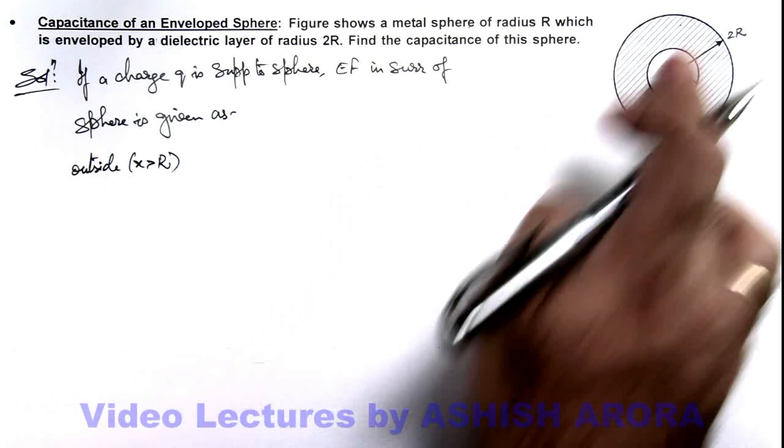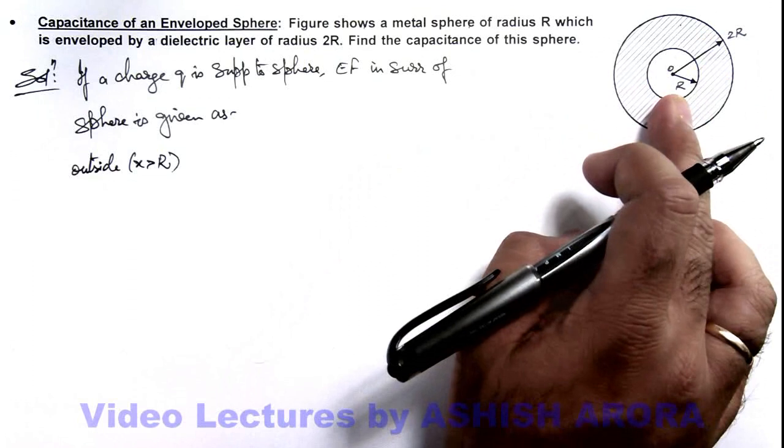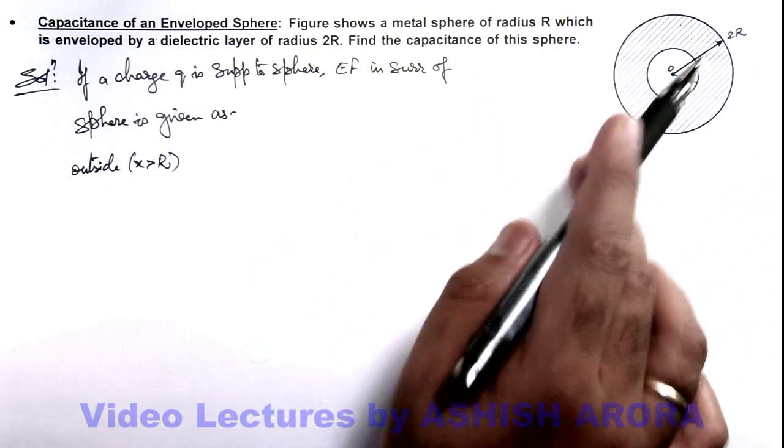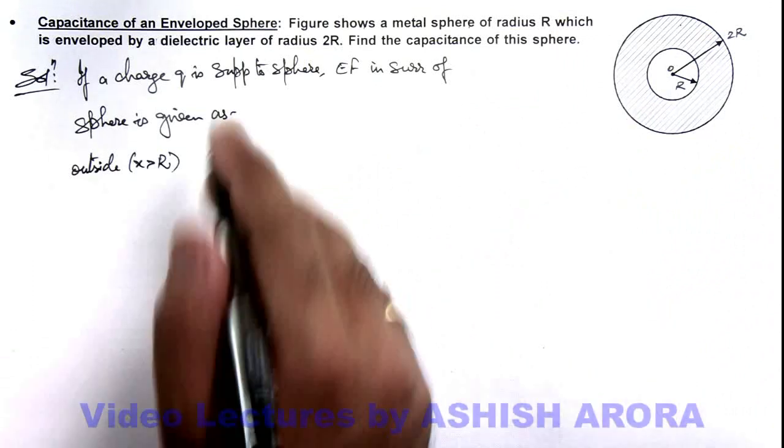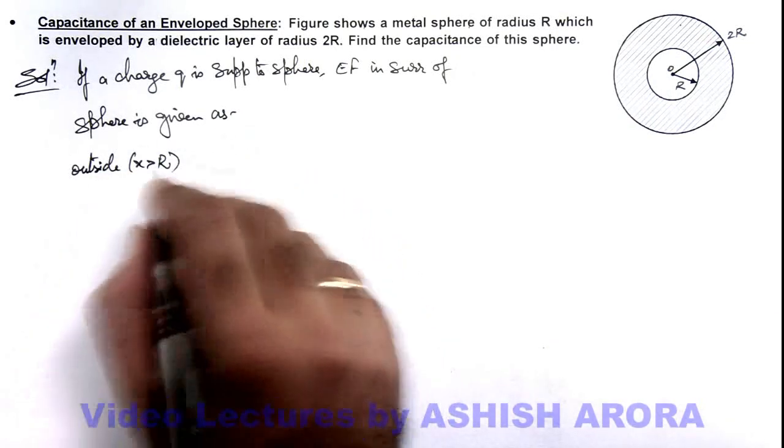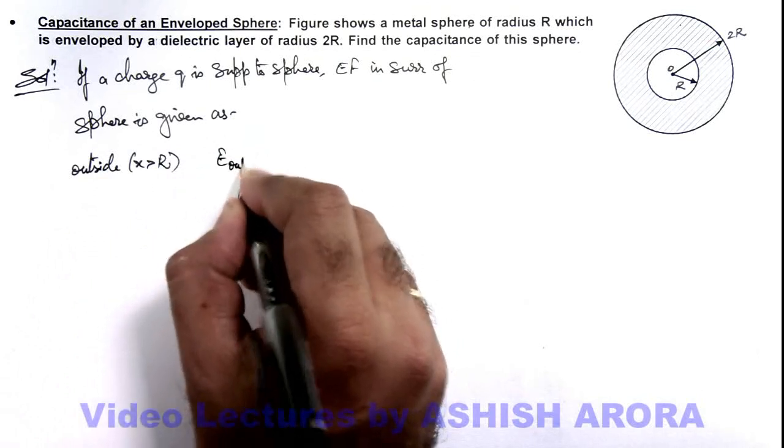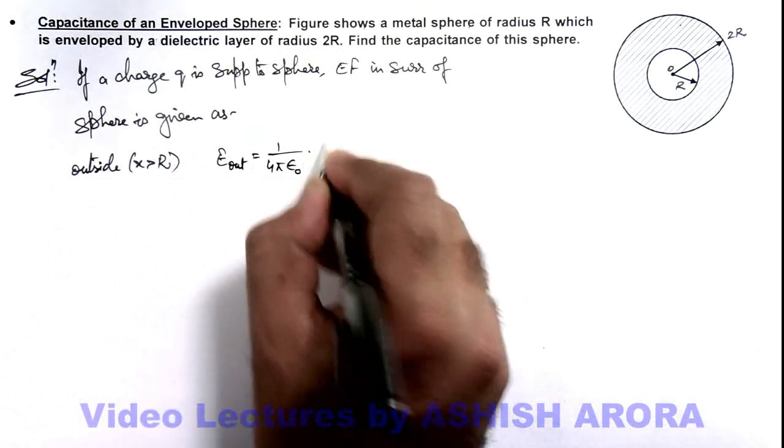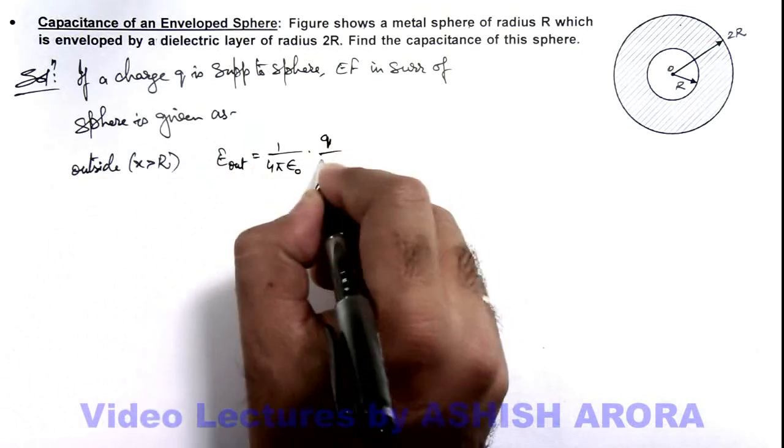We can directly write outside the total electric field will be in radially outward direction, and we can assume all charge is concentrated at the center of the system. So here outside we can directly write the electric field is equal to 1 by 4π epsilon not, Q by x square.